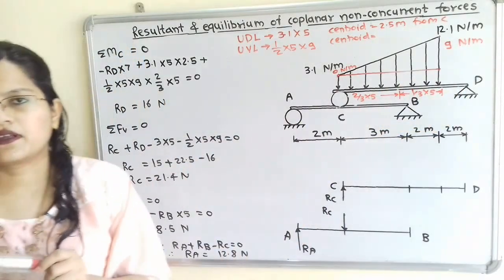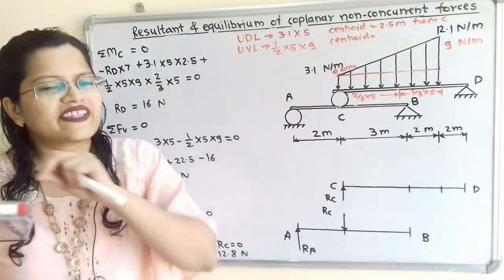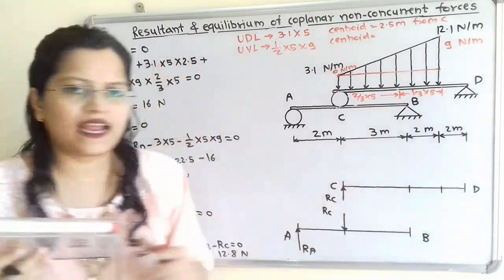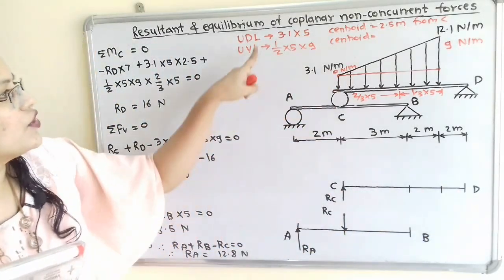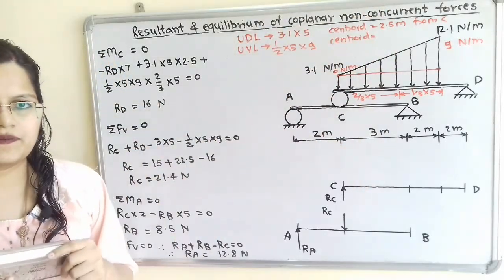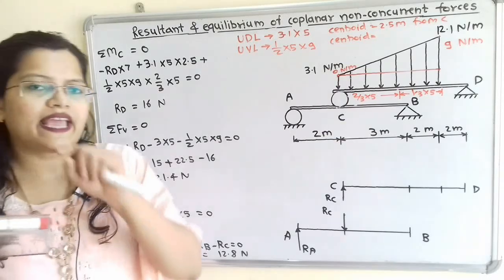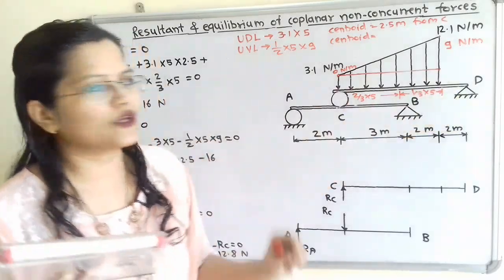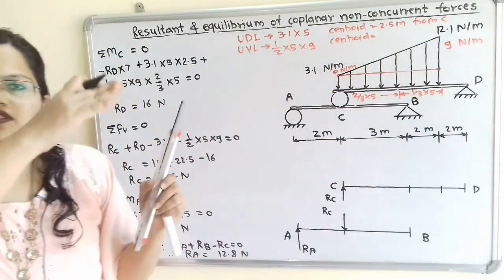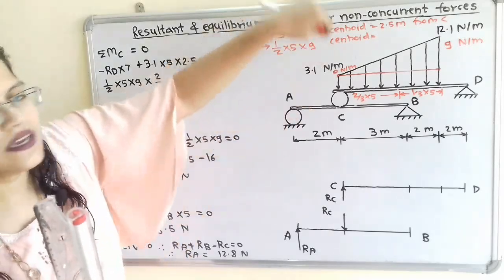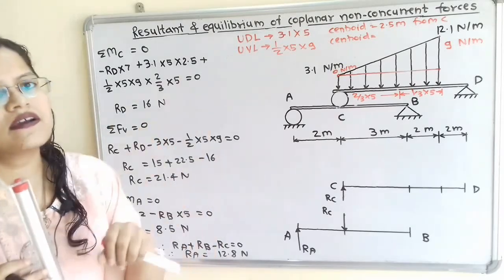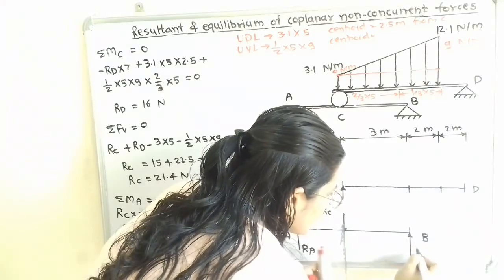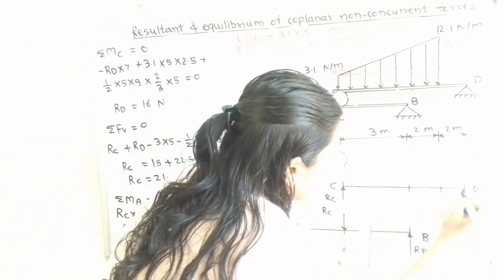At points B and D, hinged supports are given, so reactions can be in any direction — horizontal and vertical components. However, since the loading acts only in the downward direction with no inclined force, the horizontal component is essentially zero. Therefore, we need to show only vertical components RB at point B and RD at point D.